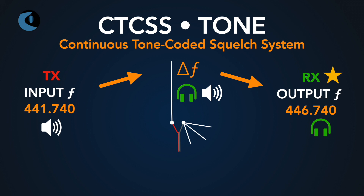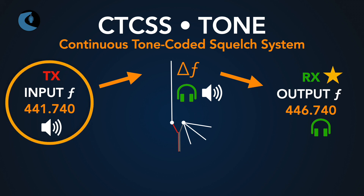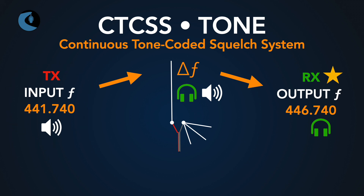You can also try listening on the input frequencies, because sometimes a new ham hasn't set up their radio correctly for the correct offset, so they're not hitting the repeater. If you listen on the input frequency without a tone, sometimes you can hear them and talk simplex directly — without any tones — and let them know they're not making it into the repeater.